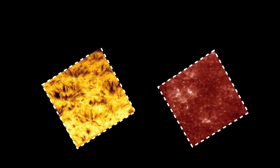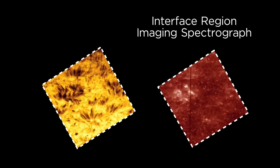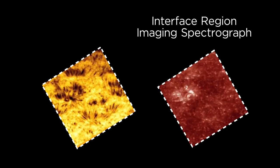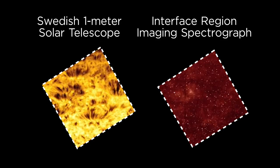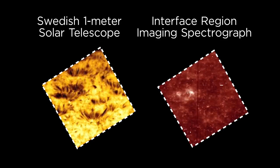Scientists compared the model simulations with observations from NASA's Interface Region Imaging Spectrograph, or IRIS, and the Swedish 1-meter solar telescope based in La Palma, Spain, and found they were closely matched.